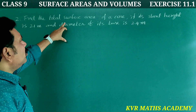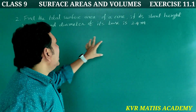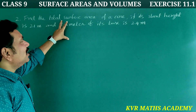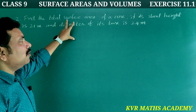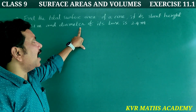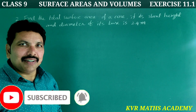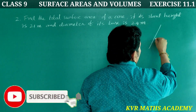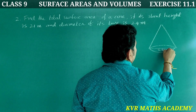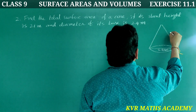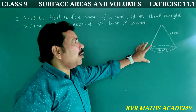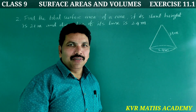Next, second question: find the total surface area of a cone if its slant height is 21 meters and the diameter of its base is 24 meters. We need to find the total surface area of the cone.